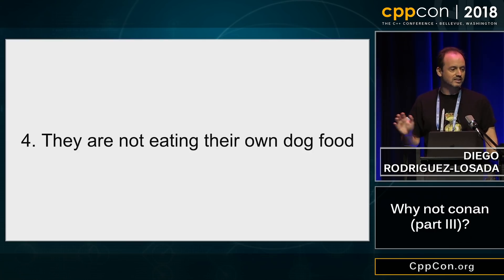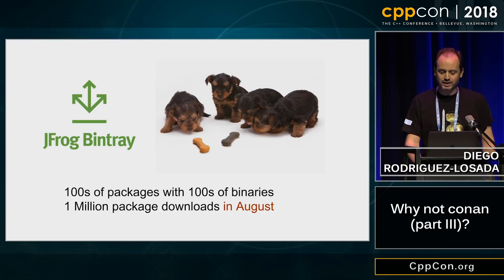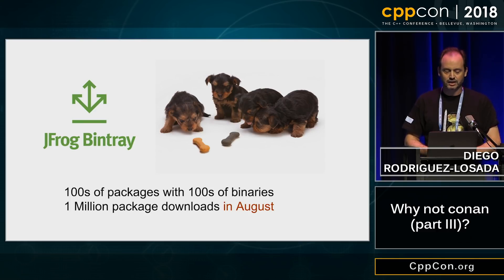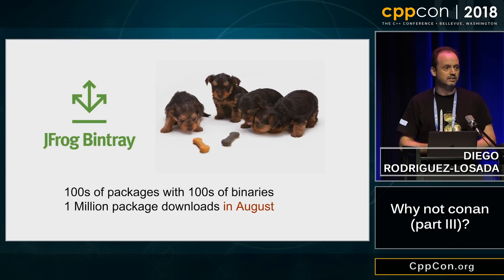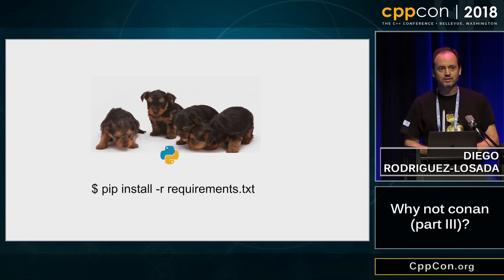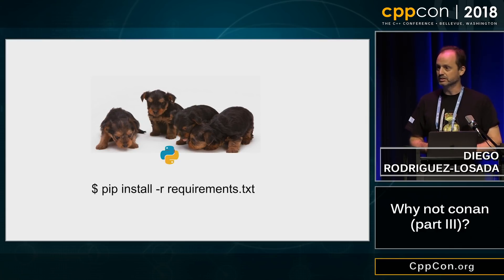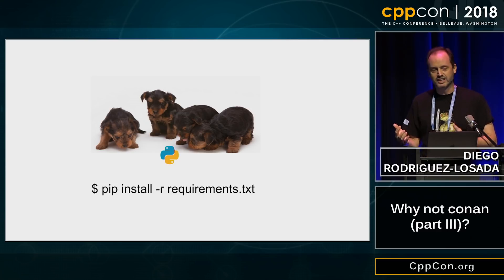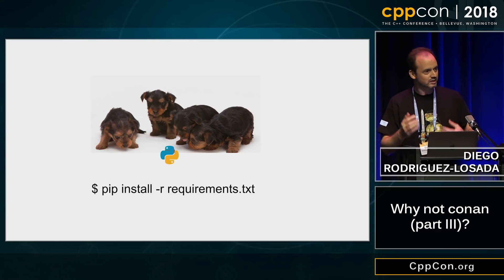Another one is that the Conan team, they are not eating their own dog food. They are helping to create packages, hundreds of packages with hundreds of binaries that they got one million dollars just in August, one million dollars. But the developers, once a month, they need to run a pip install. So they are definitely not using their tools.